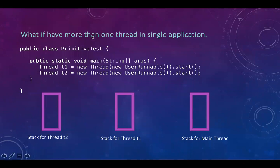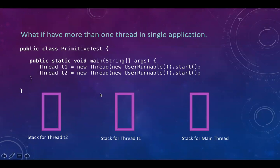Now, what happens if we have more than one thread in a single application? Assuming we have PrimitiveTest with a main method and inside that main method we have two threads — JVM will create individual stacks for each thread. As soon as we have the main thread, JVM creates a stack for it. When we create thread one, JVM creates a stack for thread one. When we create thread two, JVM creates a stack for thread two. JVM maintains a separate stack for each thread to handle all thread-related data.